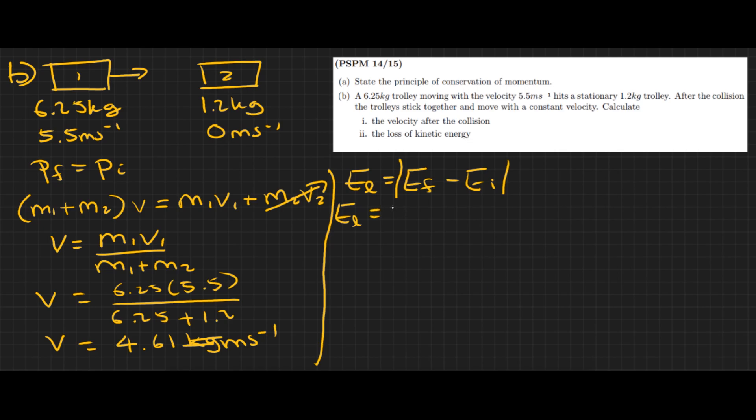Remembering that Ek equals half mv squared, I can write down EL. The loss of kinetic energy equals half mv squared. In the final situation we have (m1 + m2), and then we have the final velocity squared.